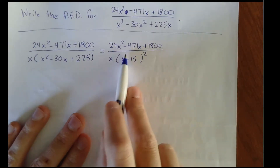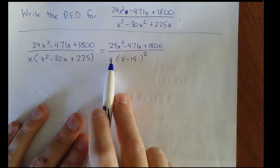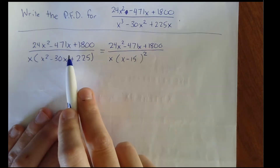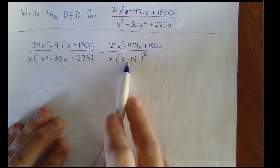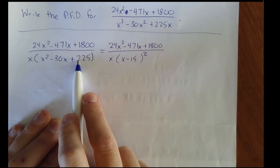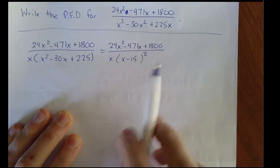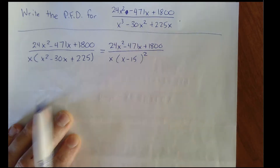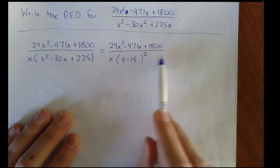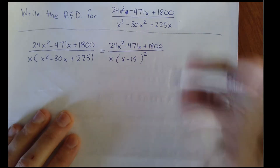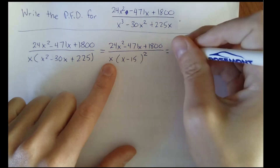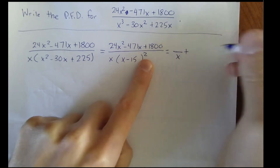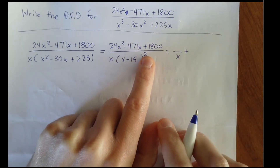The form of this decomposition is based on the factors of the denominator. We have one linear factor that's unique, and then we have a repeated linear factor. The factor is x minus 15, not x squared minus 30x plus 225, because that is not fully factored. This is a linear factor since x is raised to the first power, but it's a repeated linear factor. The distinct factor gives us one partial fraction; the repeated factor gives us this number of partial fractions equal to its exponent.